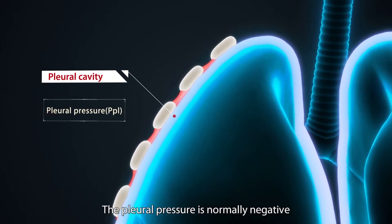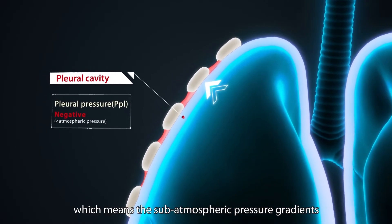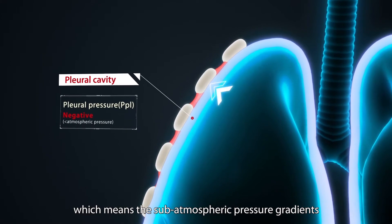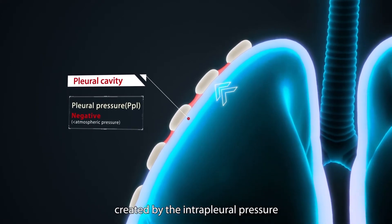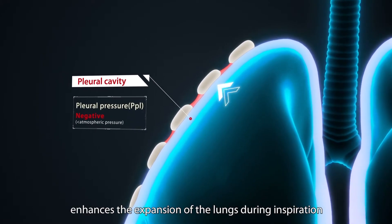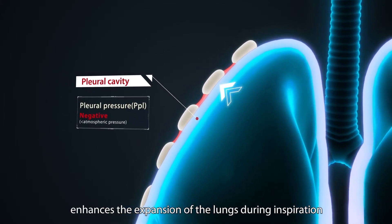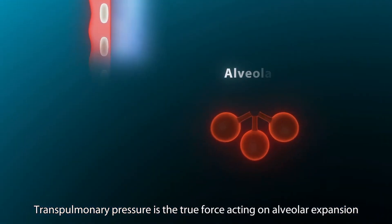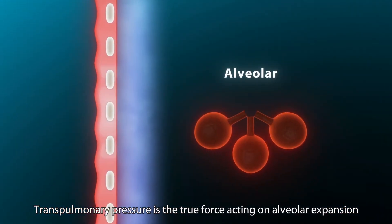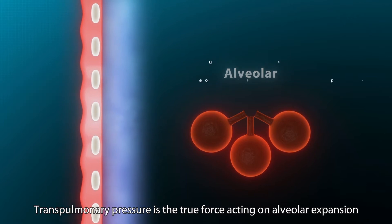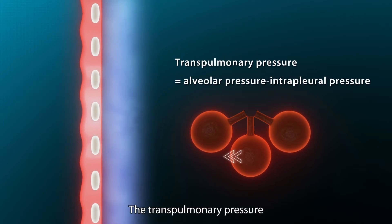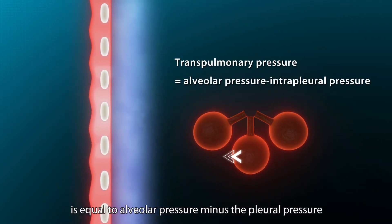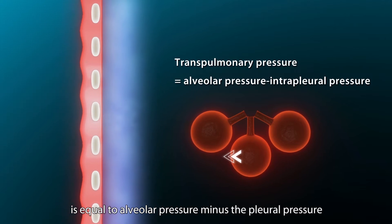The pleural pressure is normally negative, which means the sub-atmospheric pressure gradients created by the interpleural pressure enhances the expansion of the lungs during inspiration. Transpulmonary pressure is the true force acting on alveolar expansion. The transpulmonary pressure is equal to alveolar pressure minus the pleural pressure.